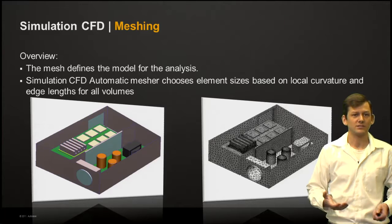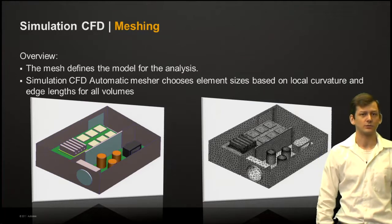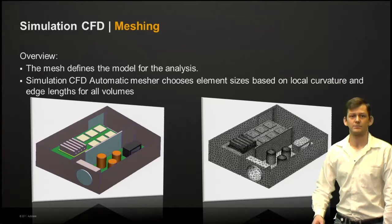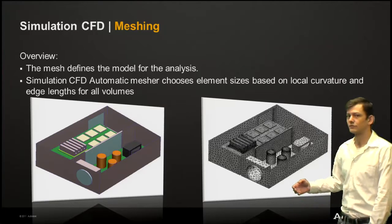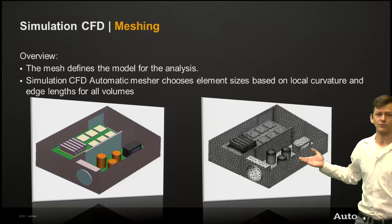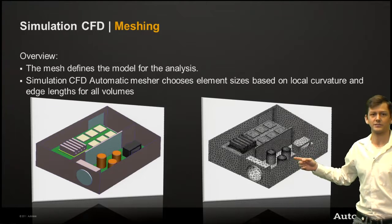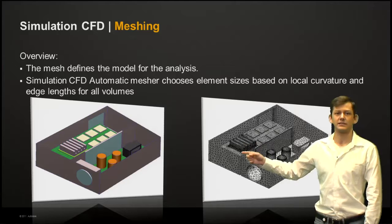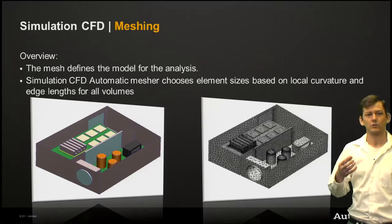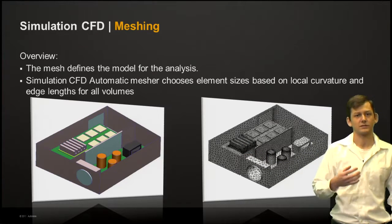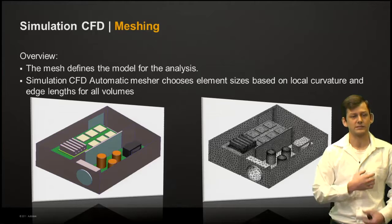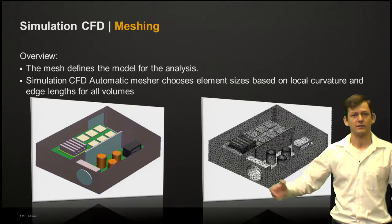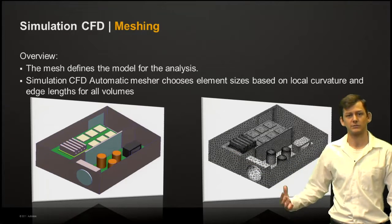The Simulation CFD Automatic Mesher will choose by default elements based on the local curvature and edge lengths for all volumes. As you can see with the capacitors here as well as the heat sink, inherently we're going to get a slightly tighter mesh there to capture the steeper gradients that would pertain to the heat coming off the heat sink and some of those capacitors.